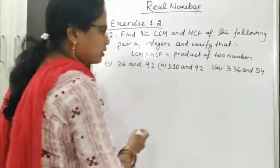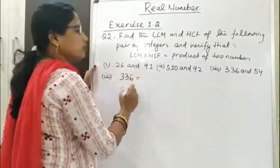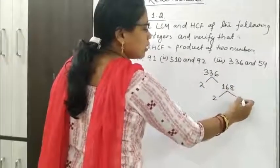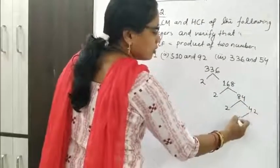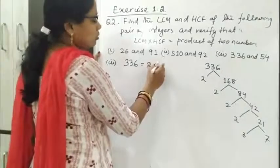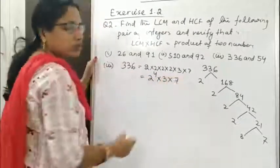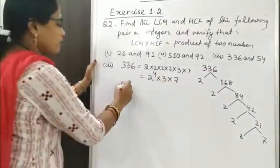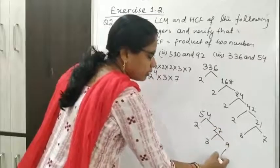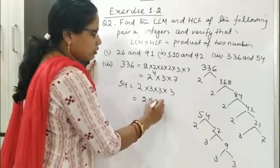Now the third pair, 336 and 54. For 336: 336 = 2 × 168 = 2 × 2 × 84 = 2 × 2 × 2 × 42 = 2 × 2 × 2 × 2 × 21 = 2 × 2 × 2 × 2 × 3 × 7 = 2⁴ × 3 × 7. For 54: 54 = 2 × 27 = 2 × 3 × 9 = 2 × 3 × 3 × 3 = 2 × 3³.